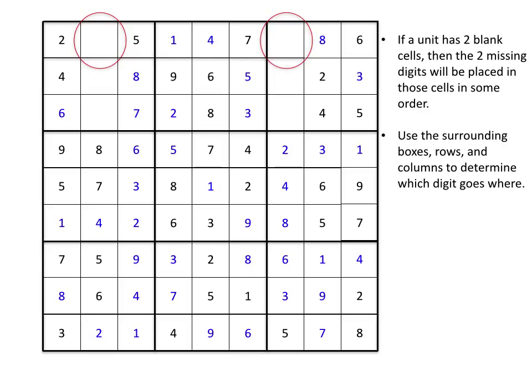However, we do not know which number is going to go into which cell. We are going to need to look at the 3x3 boxes as well as the columns to see if we can get any more clues. Well, the right cell is in a box that already contains a 3, so that one can't be a 3. That leaves the only possibility for that cell to be a 9. And that means the other cell on the left is going to be our 3.